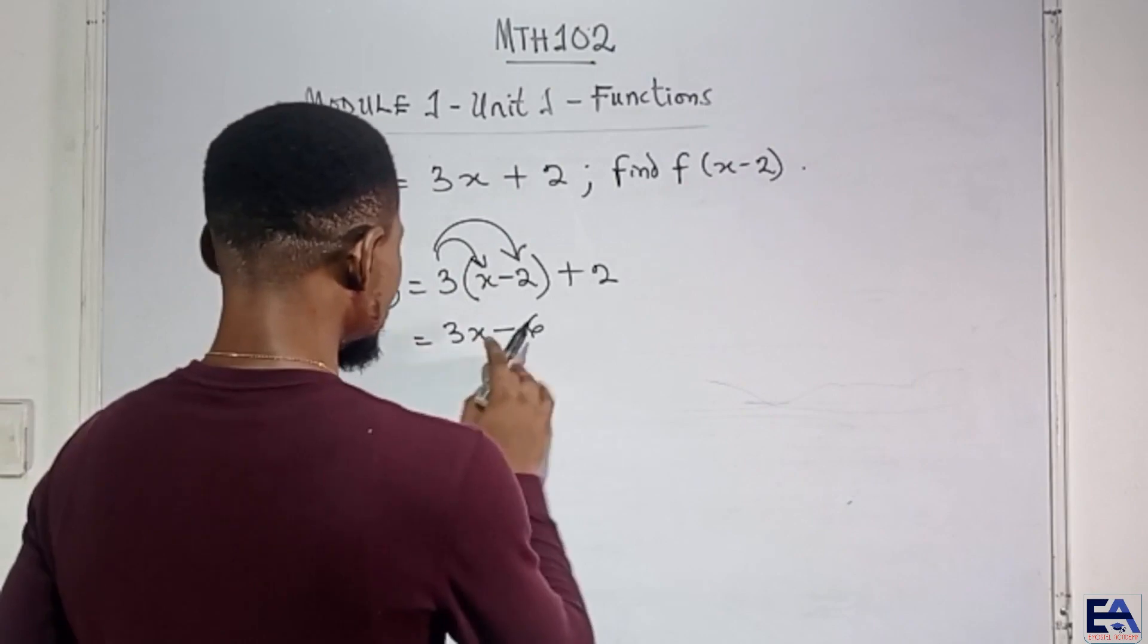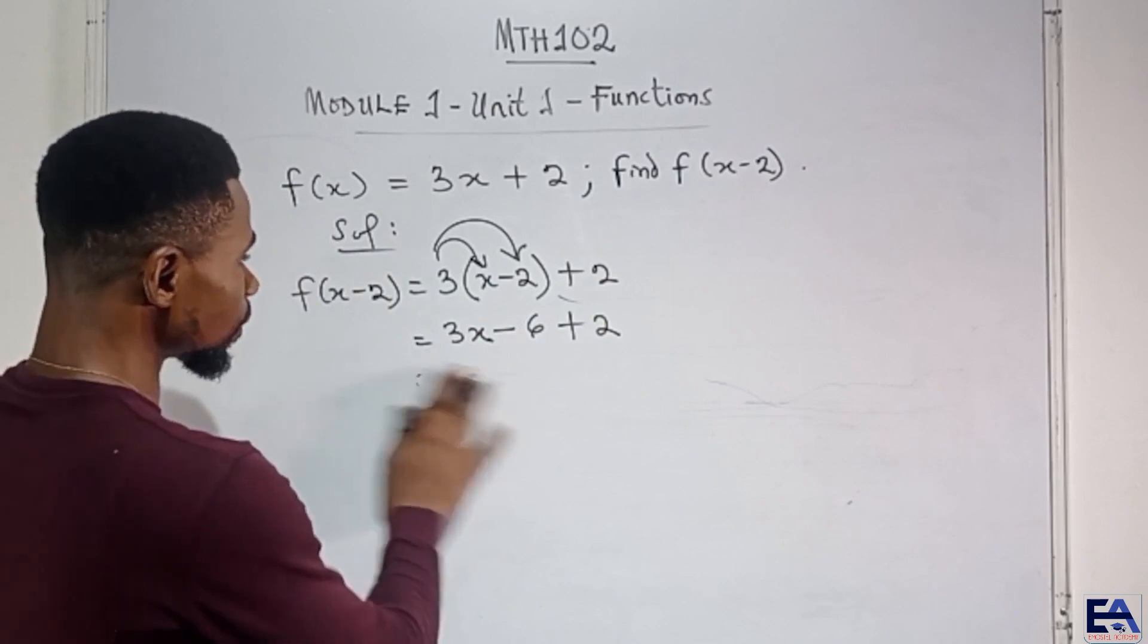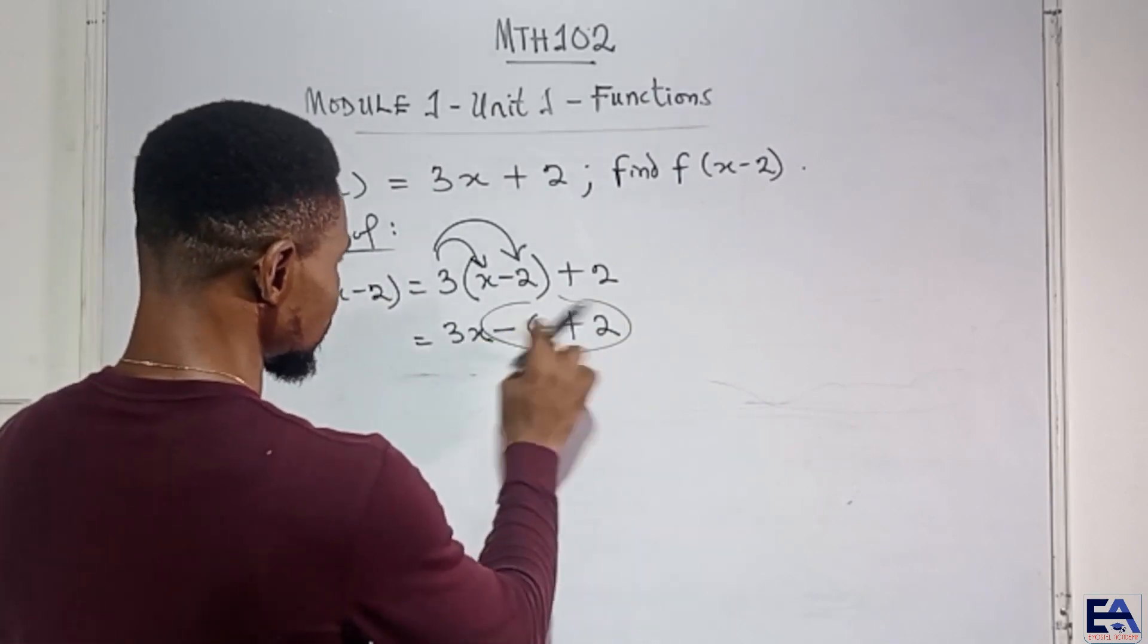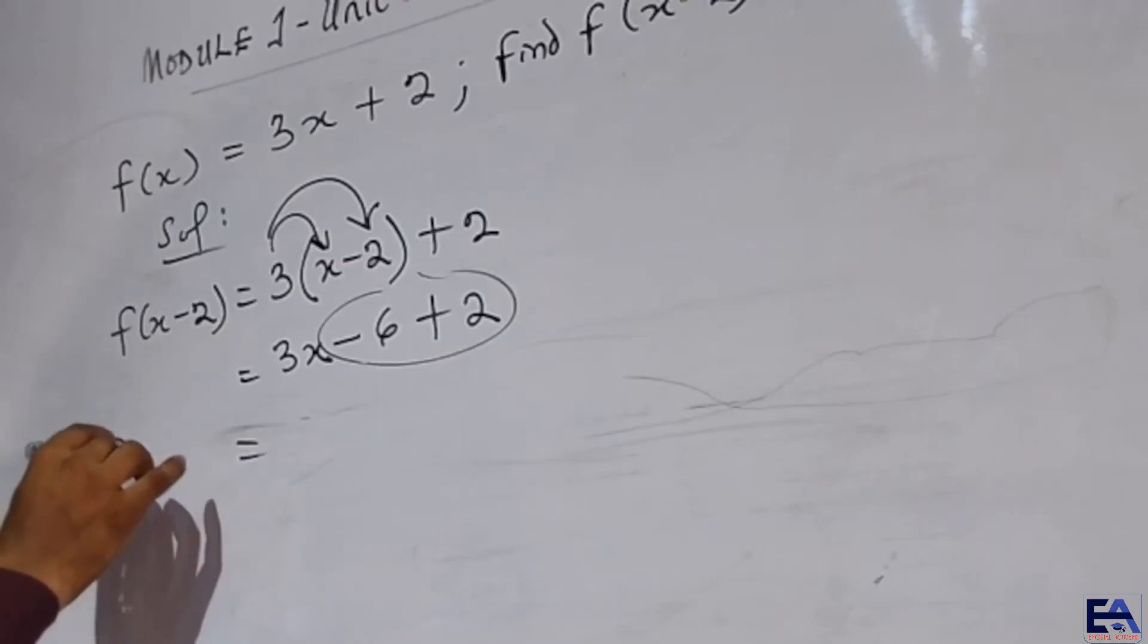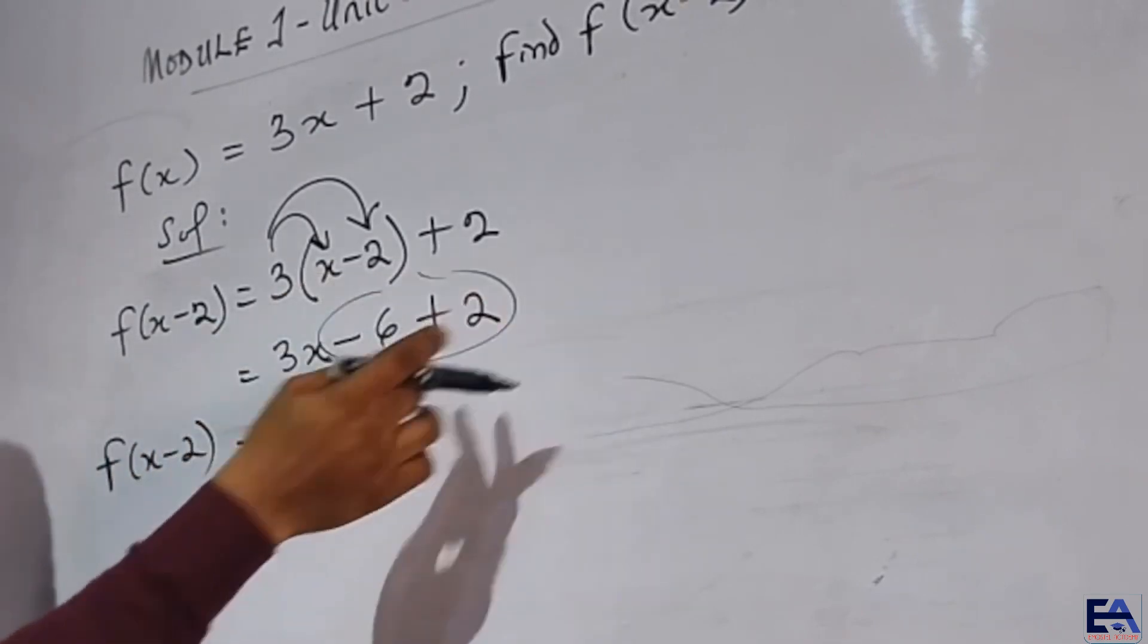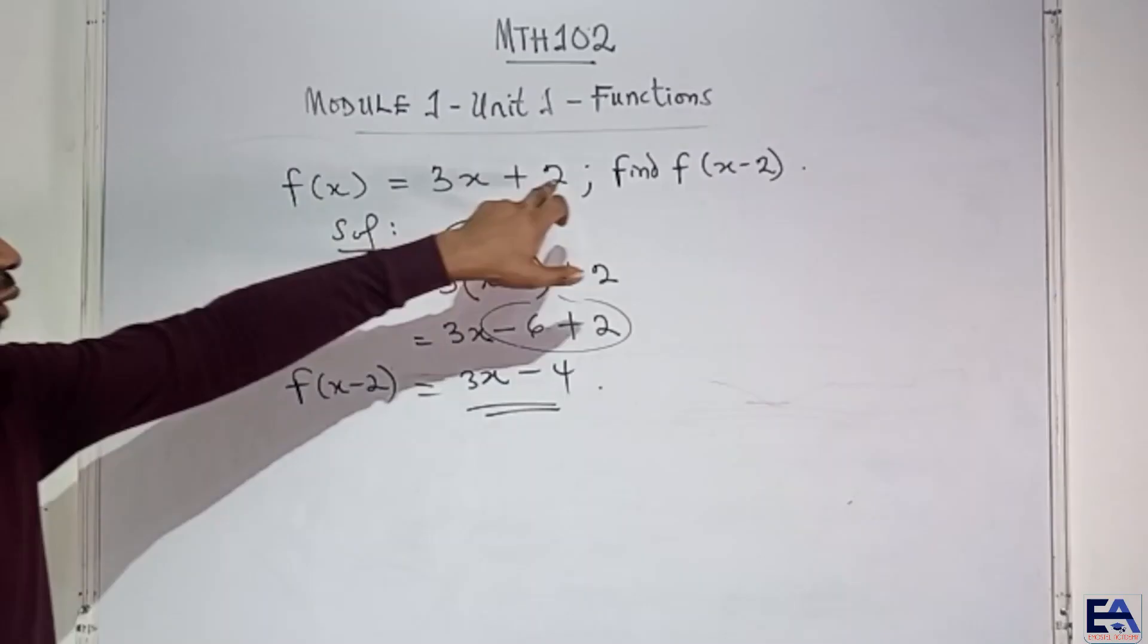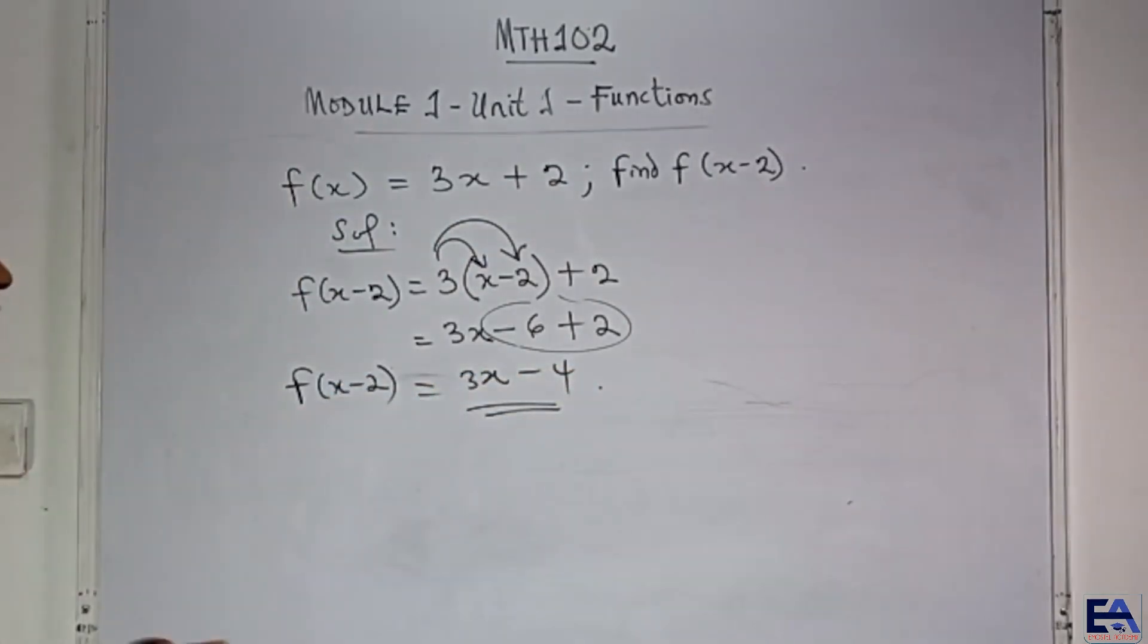Now, so we have 3x minus 6, then this plus 2, you bring it down. So having it this way, we just resolve this part. Because we cannot add 6 to x, to anything x. We'll just collect like terms. This and this, they are like terms. So they can add or subtract each other. So you just come here, you see, f of x minus 2 is equal to 3x, then minus 6 plus 2 simply means I'm owing 6, I have 2. So that would be like I'm still owing 4. So this is the answer. If f of x is equal to 3x plus 2, then f of x minus 2 is 3x minus 4. Is that very clear?